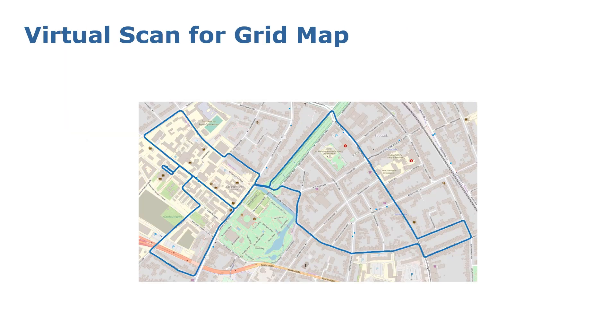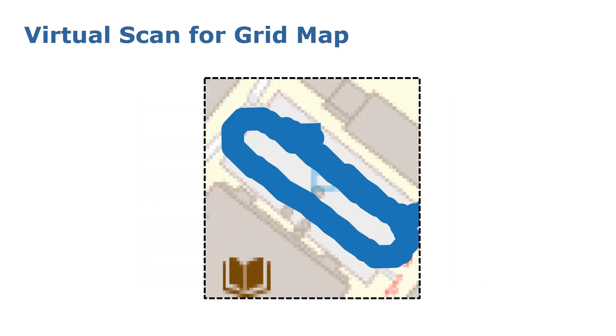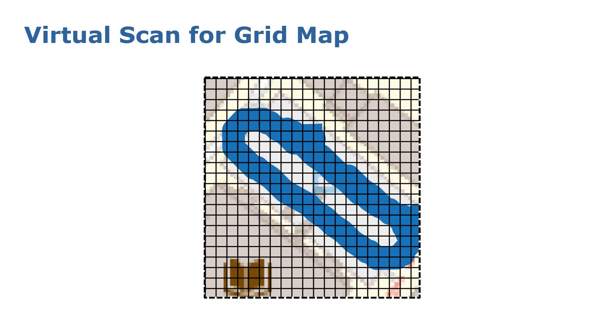Here, I show an example of generating the map frames. We zoom in on a small area of our map, and you see that we first put grids on it. And for each grid, we will generate a virtual scan and store it in the map.